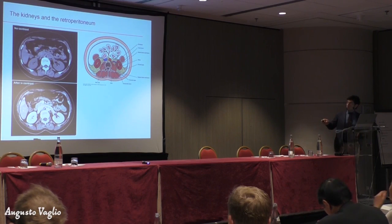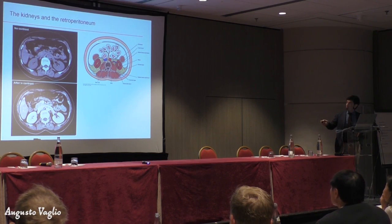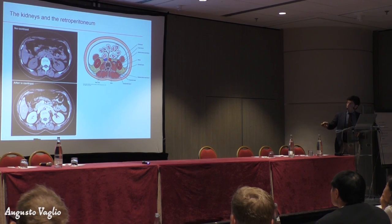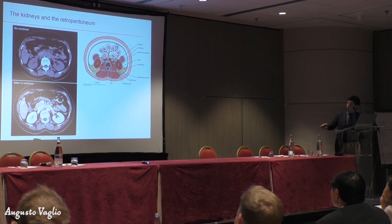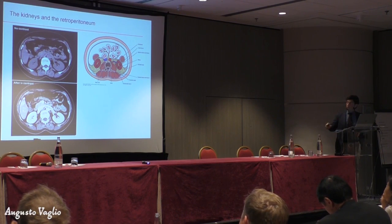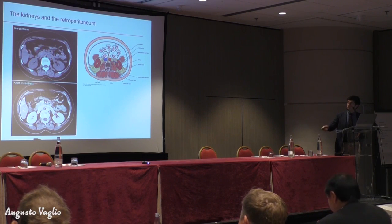Now, moving from anatomy to what is a CT scan — what is computer tomography. This is a computer tomography scan in a healthy subject. This is without contrast medium and this is after contrast medium. The contrast medium is injected intravenously, goes into the circulation and is filtered by the kidneys, which is why structures that are gray in the image without contrast medium become white after contrast medium.